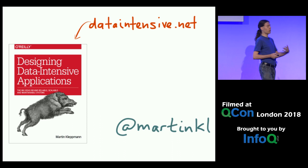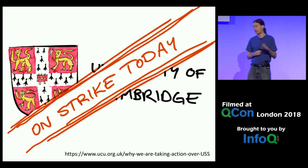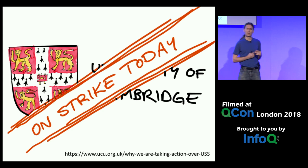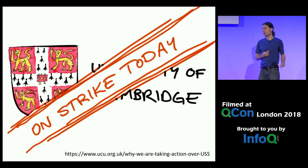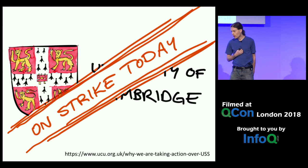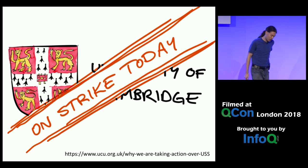I am a researcher at the University of Cambridge, except today I am formally on strike. There's a dispute going on at many UK universities where the powers that be want to essentially cut back our pension schemes in a very radical and unjustified way, which amounts to a massive pay cut. So I'm still going to give the talk because we have no problems with QCon — it's our university that we have a problem with. I'm giving this talk as a private individual who happens to be interested in distributed systems, rather than as an employee of the University of Cambridge.